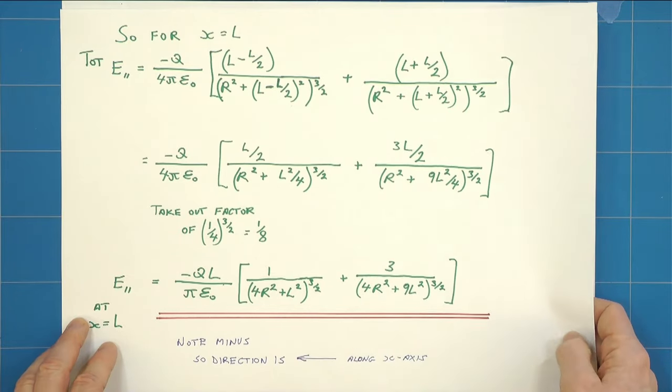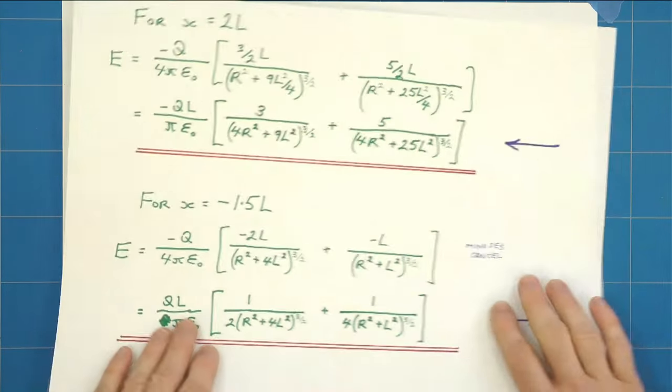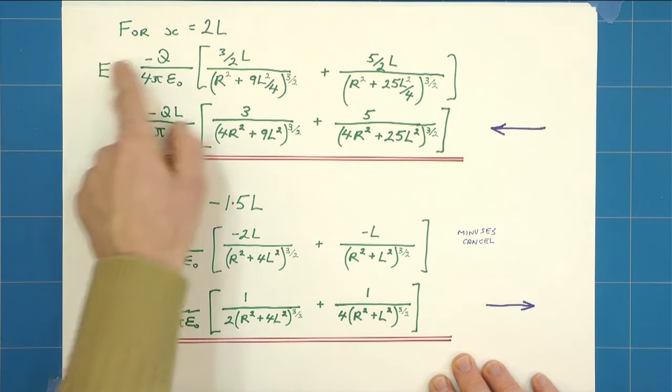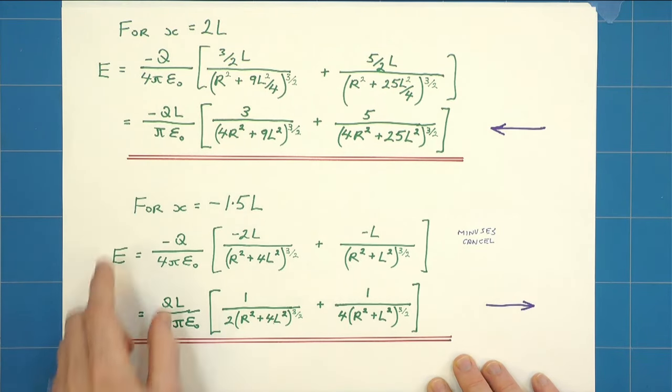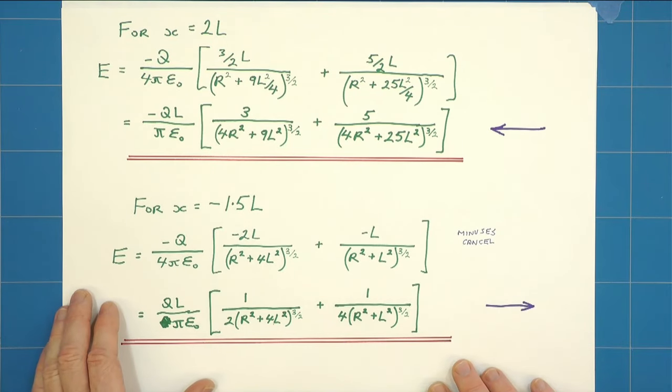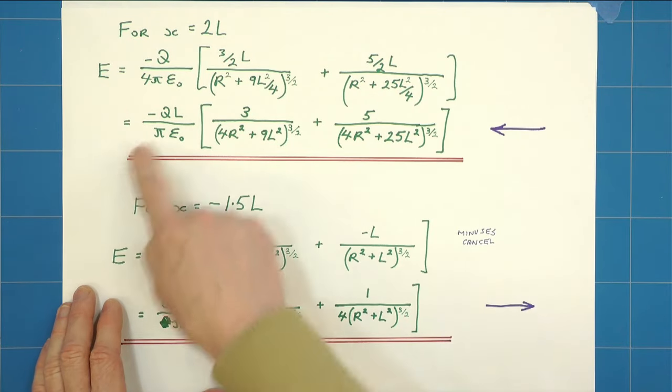the charge on both rings is negative. For x equals 2L, we repeat the same process and we get this expression here, which again simplifies when we take out our factor of 1 over 8 from top and bottom to that. And again it's negative, so it's in that direction.